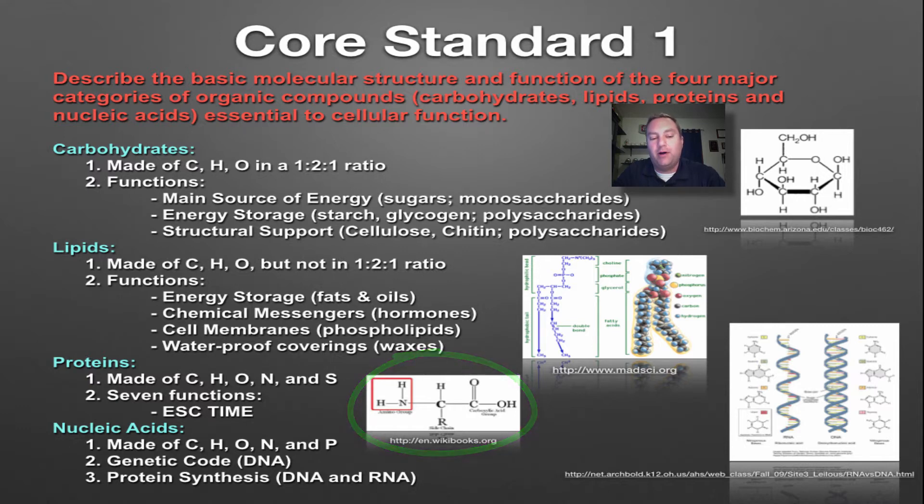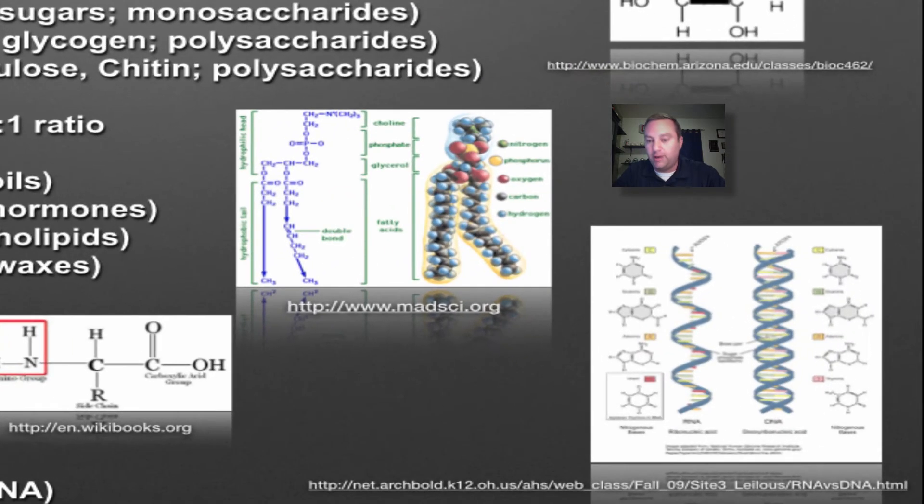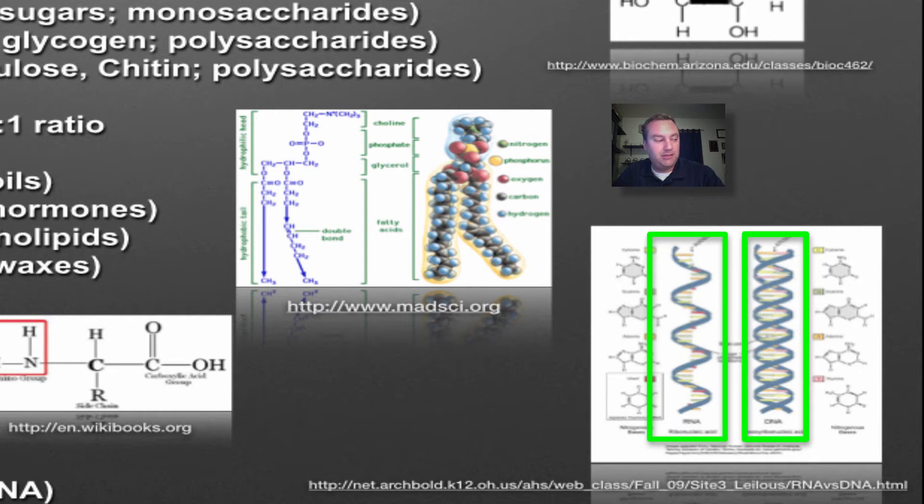And then the fourth type are nucleic acids. Nucleic acids are made up of carbon, hydrogen, oxygen, nitrogen, and phosphorus, and they pretty much serve two functions. Number one, DNA, which can be the genetic code, is how information is inherited from parent to offspring. And then when you use DNA with its sister RNA, that's used in the process of protein synthesis. In this picture in the lower right-hand corner, on the left, you're going to see the single-stranded RNA, and on the right, you're going to see the double-stranded DNA.